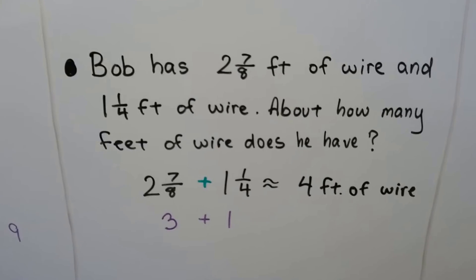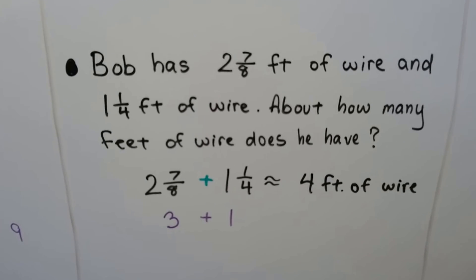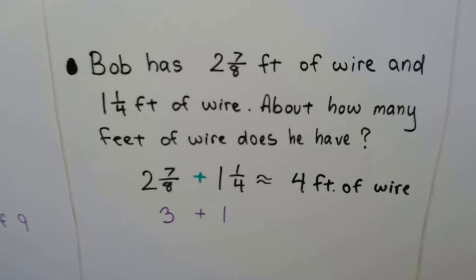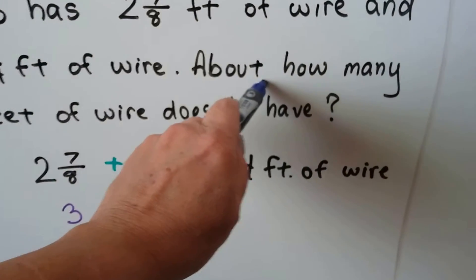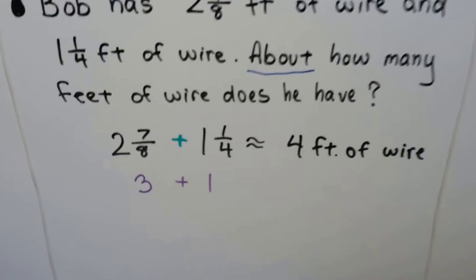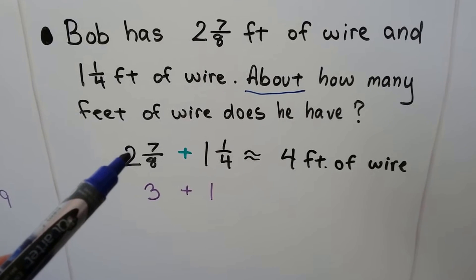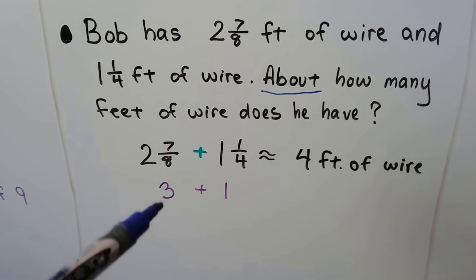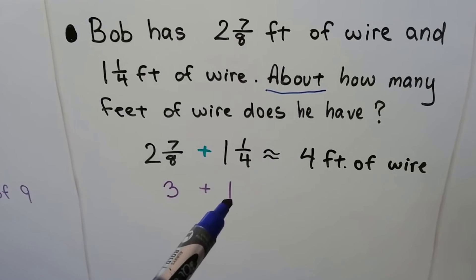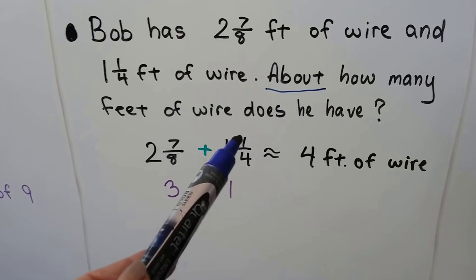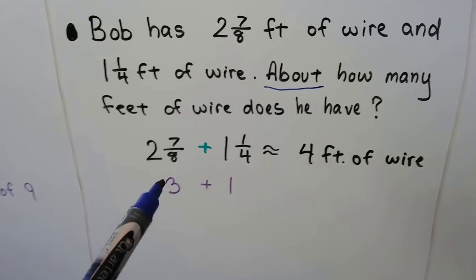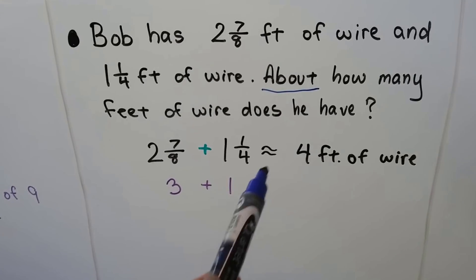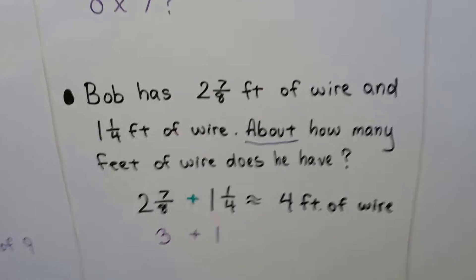Bob has 2 and 7 eighths feet of wire and 1 and 1 fourth feet of wire. About how many feet of wire does he have? It says 'about,' so we're estimating. We add 2 and 7 eighths plus 1 and 1 fourth. We estimate this to be about 3, and we round this down to 1 because 1 is less than half of 4. So we've got 3 plus 1, so he's got about 4 feet of wire.